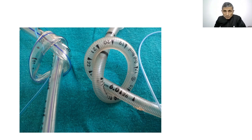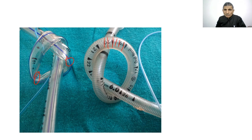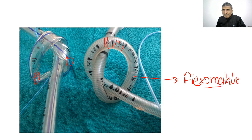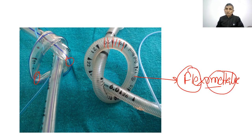A plain PVC endotracheal tube kinks when bent. The flexometallic tube has a wire coiled inside, making it flexible and kink-resistant. It is used in situations where there is risk of kinking or compression — it is a non-kinking tube.